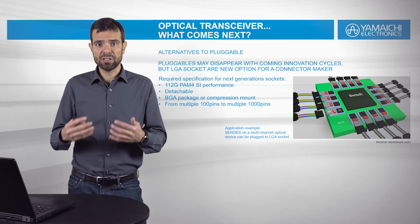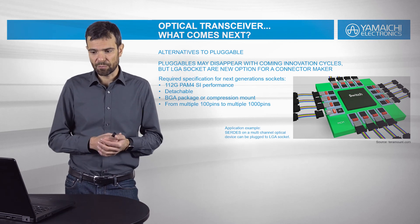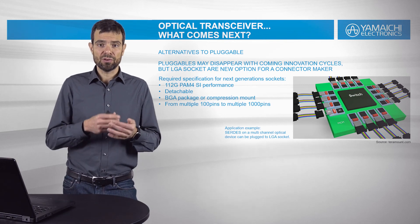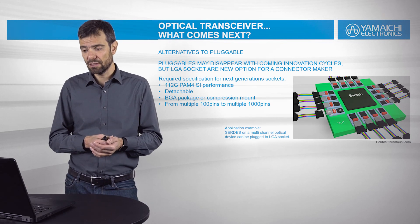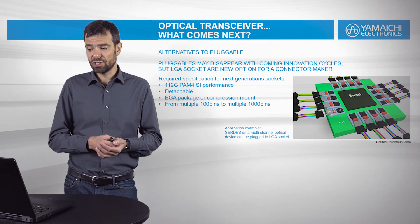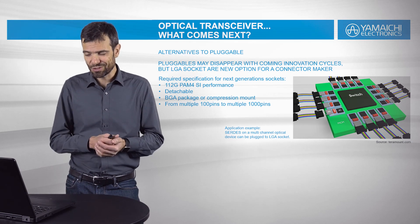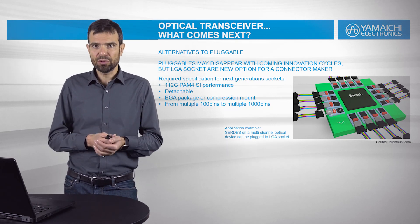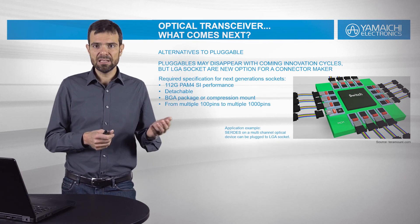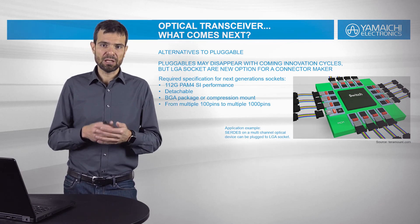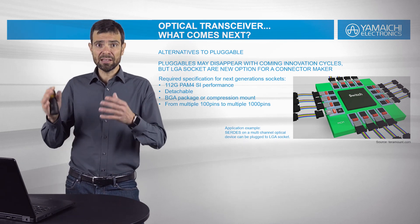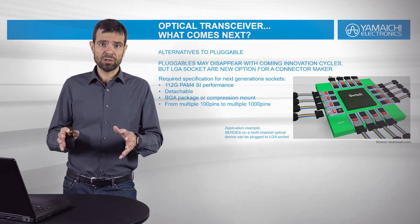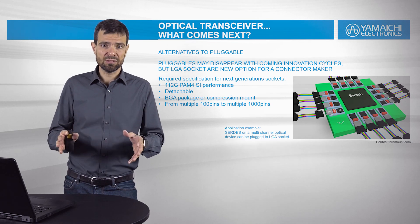The required specifications for such sockets would be 112G compatibility, detachable, soldered or compression mount, and from a multiple of 100 pins to a multiple of 1000 pins. On that picture, we can see a multi-chip module equipped with multiple chips. The switch could be placed on a socket of one or two thousand pins; the small IC could be plugged onto a socket of a couple of hundred pins; and the entire multi-chip module could be attached to a PCB with a socket of several thousand pins — five thousand or even beyond.